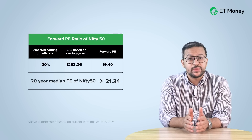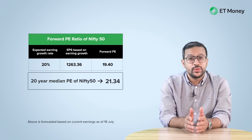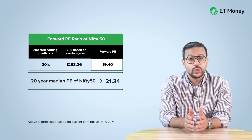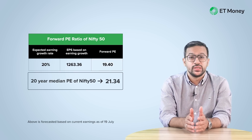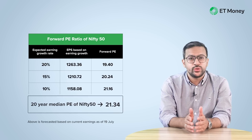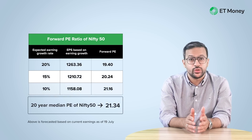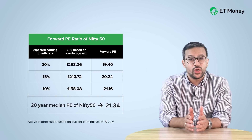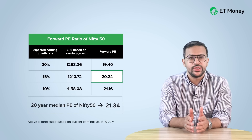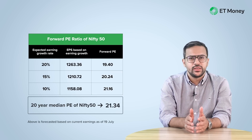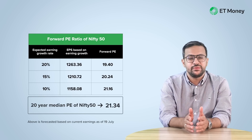Earnings generally follow a rather linear pattern and, bearing some colossal events like a pandemic, they tend to be quite predictable. So if we expect a similar 20% growth in the next financial year, the Forward PE of Nifty 50 would be 19.4 — lower than the 20-year median PE of 21.34. If we assume earnings to grow at a lower rate, say 15% or 10%, then the Forward PE of the index is 20.2 and 21.16 respectively. These ratios are broadly in line with the 20-year median PE of the Nifty 50 index.